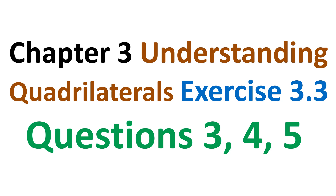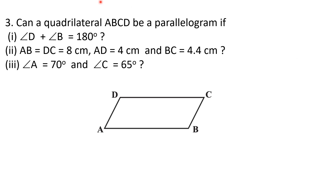Question number 3: Can a quadrilateral ABCD be a parallelogram? First condition: angle D plus angle B is equal to 180 degrees. Second condition: AB is equal to DC, and AD is equal to BC (with given values). Third condition: angle A is equal to 70 degrees and angle C is equal to 65 degrees. We can draw a rough sketch of a parallelogram.